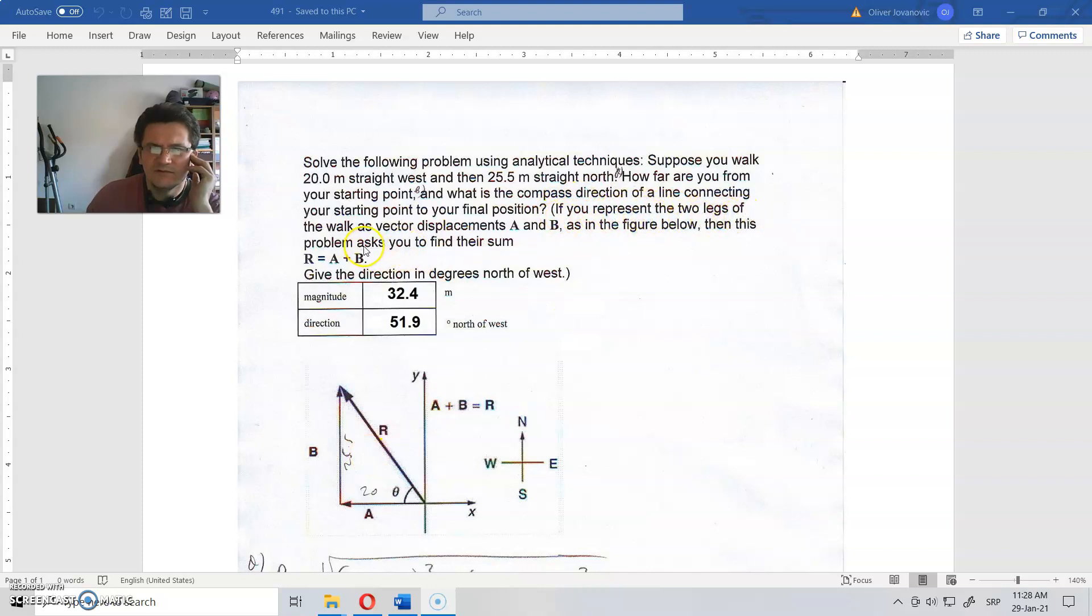If you represent the two legs of the walk as the vector displacement A and B, then the problem asks you to find their sum. The direction is north of west, so this is the angle that we needed.